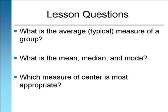This concludes lesson three. Can you answer the three questions in this lesson? What is the average, typical measure of a group? What is the mean, median, and mode? Which measure of center is most appropriate? You may use the menu tabs on the left to study this lesson more. Lesson four has two parts. It will show you how to quantify and describe the spread or variability of the data.